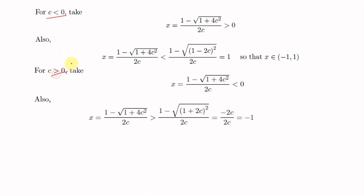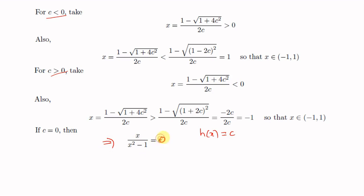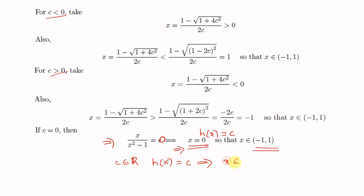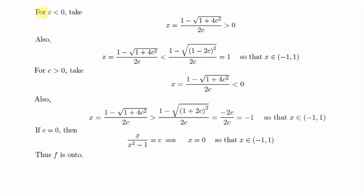When c = 0, h(x) = c implies x/(x²-1) = 0, so x = 0, which is an element of (-1,1). In all cases — c < 0, c > 0, and c = 0 — we found x ∈ (-1,1) with h(x) = c, so h is onto.